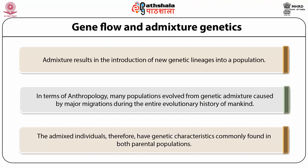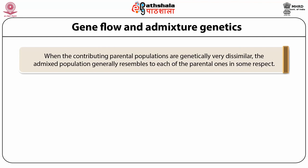The admixed individuals therefore show genetic characteristics commonly found in both parental populations. When the contributing parental populations are genetically very dissimilar, the admixed or hybrid population generally resembles each of the parental ones in some respect. Most often their genetic constitution is somewhere in between those of the contributing parental populations. In describing the population structure of a mixed population, it is important to identify the mixing elements and the proportion by which mixture has taken place.